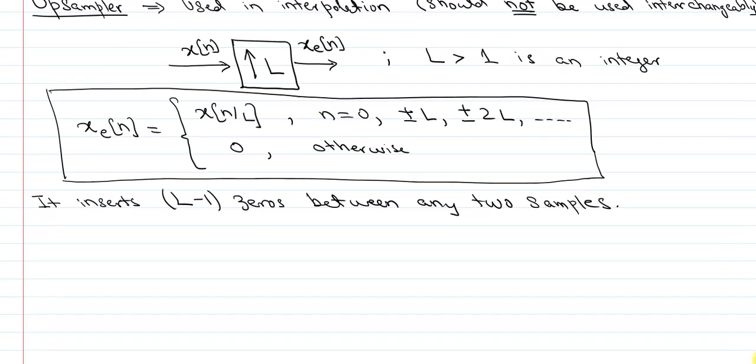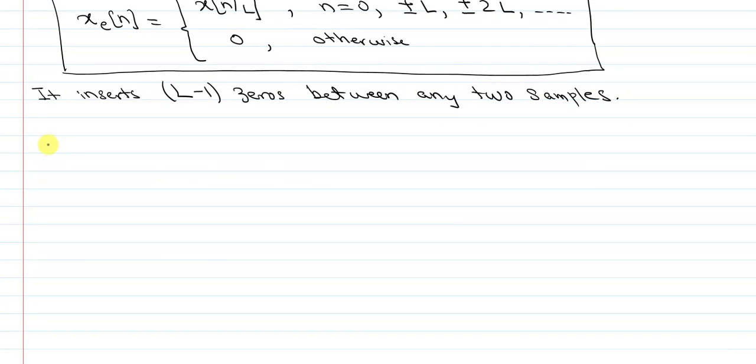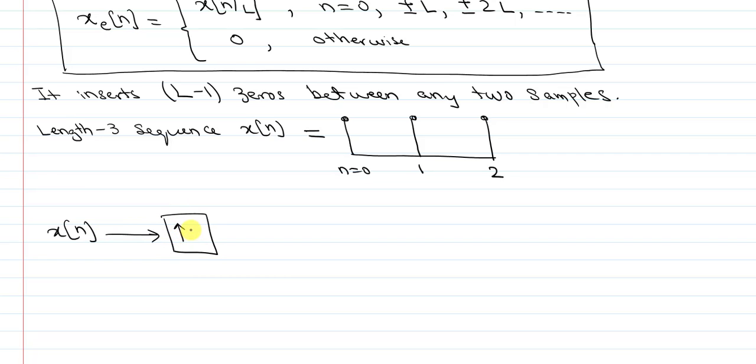Okay, so while a down sampler threw away samples, an up sampler adds zeros into your original sequence. So let's take an example. So let's start with a length 3 sequence. Xn. What is that sequence? Well I'll just take that to be 1, 1, and 1. And everything else is 0. So that is n equal to 0, 1, 2. This is your Xn. And let's say that I input now this Xn into an up sampler that does up sampling by a factor of 2.